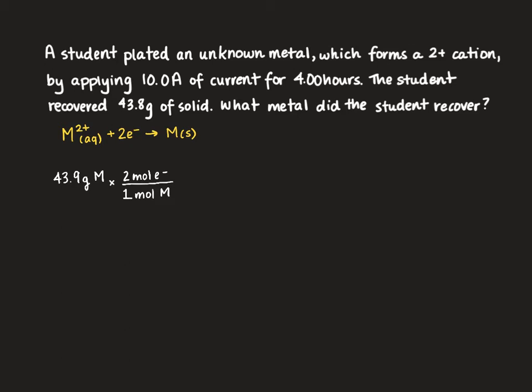At this stage we have grams of M times moles of electrons per moles of M. We need to get rid of the moles of electrons.